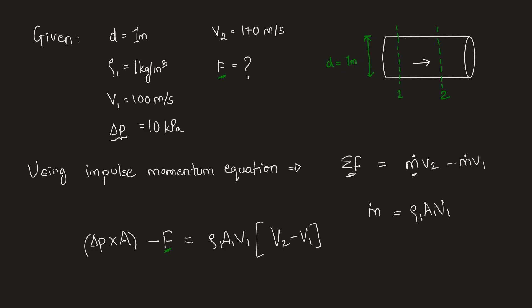So, we will simply substitute all these values. Delta P is 10 kilopascal. Let's substitute it in pascal so we have 10 into 10 to the power 3 pascal into area can be found out using diameter which will be pi by 4 into 1 square. This area is in meter square here minus F is equal to.